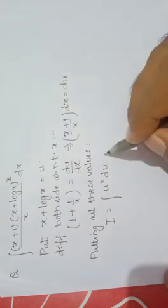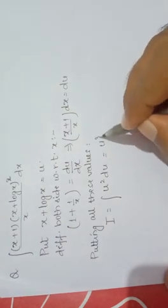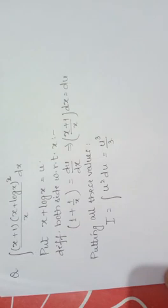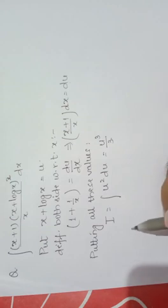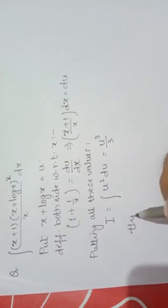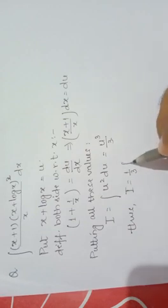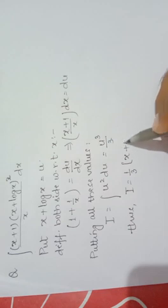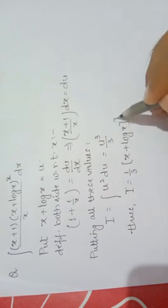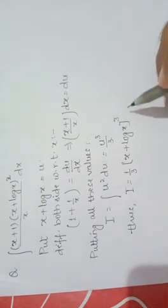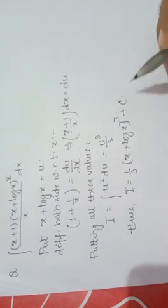Putting all these values, our I becomes: (x plus log x)² is u², and (x plus 1 by x) dx equals du. Now the integration becomes very simple — it is u³ by 3. Now put the value of u: I equals 1 by 3 times (x plus log x)³ plus integral constant c.